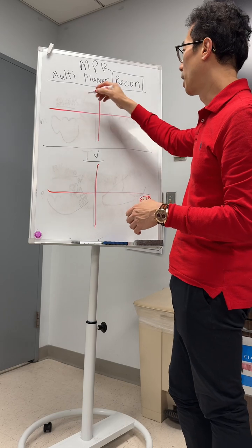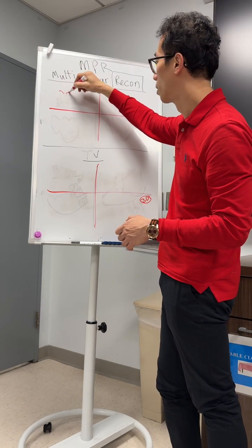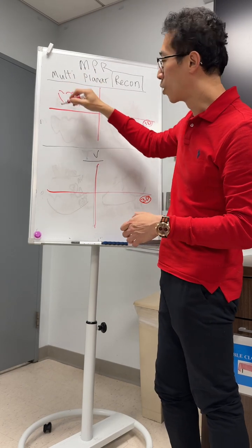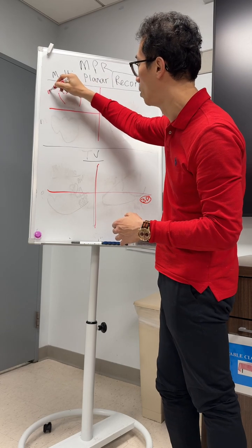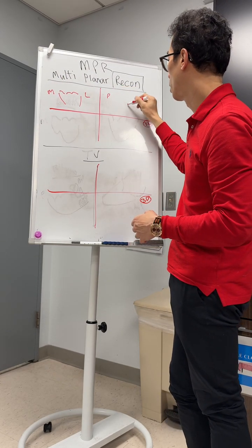And then if you think about it, this will be the anatomy that will be equivalent of the bicommissural x-plane. Now you're not going to see the whole box, remember that. So this is lateral, medial.